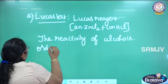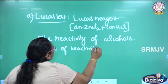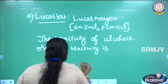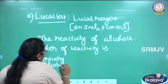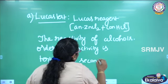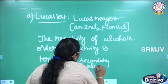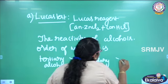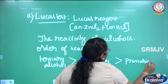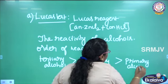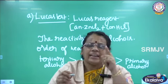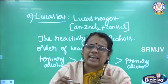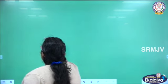What is the reactivity? The order of reactivity of alcohols in Lucas test: tertiary alcohol is greater than secondary alcohol, and secondary alcohol is greater than primary. So we can see the order of reactivity of alcohols in Lucas test is tertiary > secondary > primary. Let me see why this reactivity varies — why tertiary alcohol is highly reactive when compared to secondary and primary.